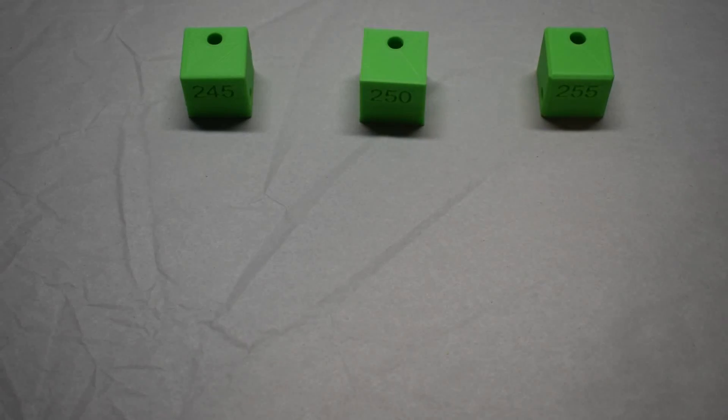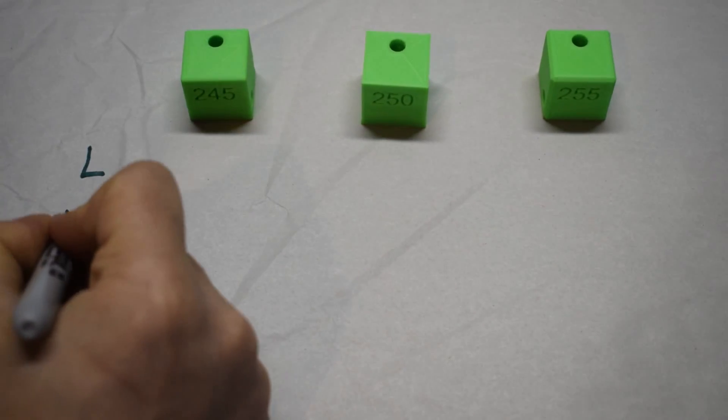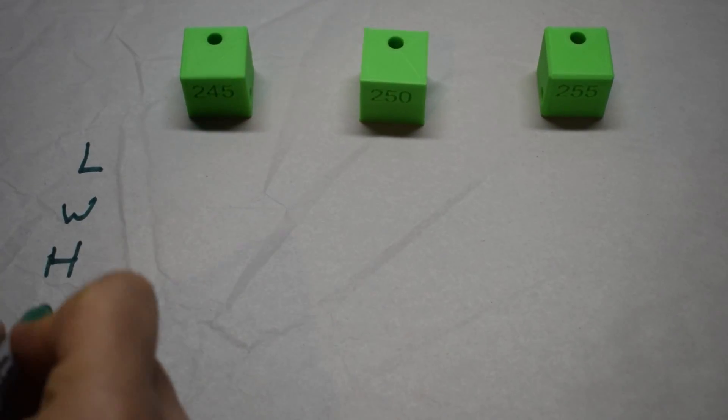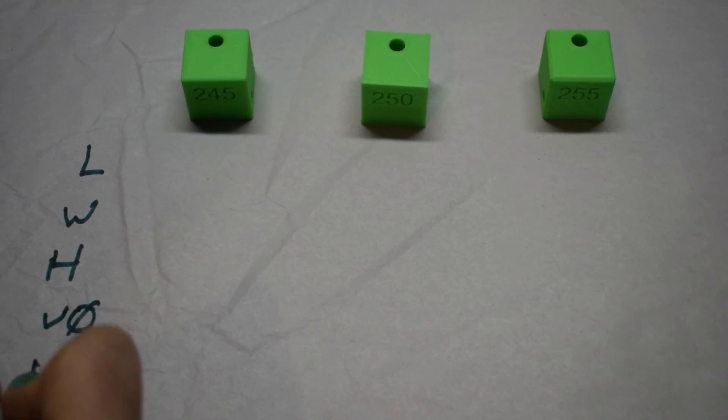To evaluate these parts, we're going to look at the length, the width, and the height of each one, as well as the vertical diameter and the horizontal diameter.